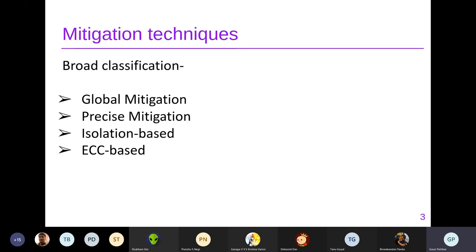First, we'll look at existing mitigation techniques, which are broadly classified into four types. In global mitigation, we increase the refresh rate so there is less time between refreshes. But if the threshold is exceeded — if more accesses are happening — then the attacks still persist and this approach can be broken.